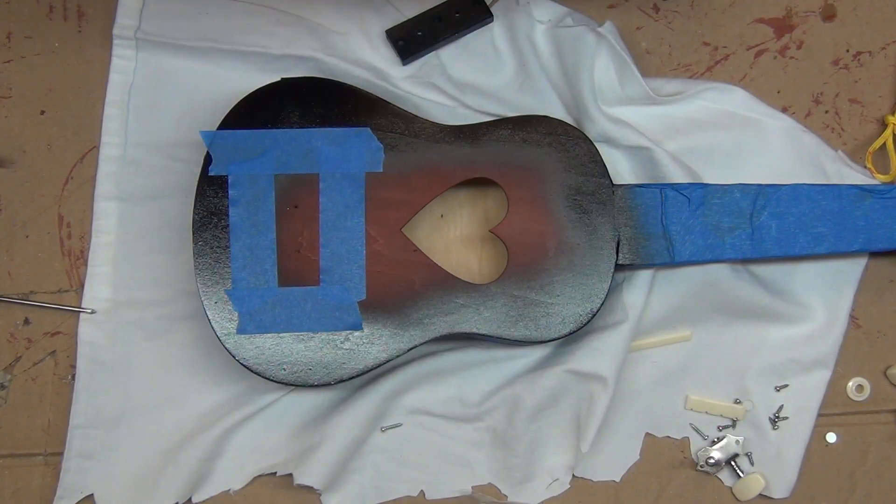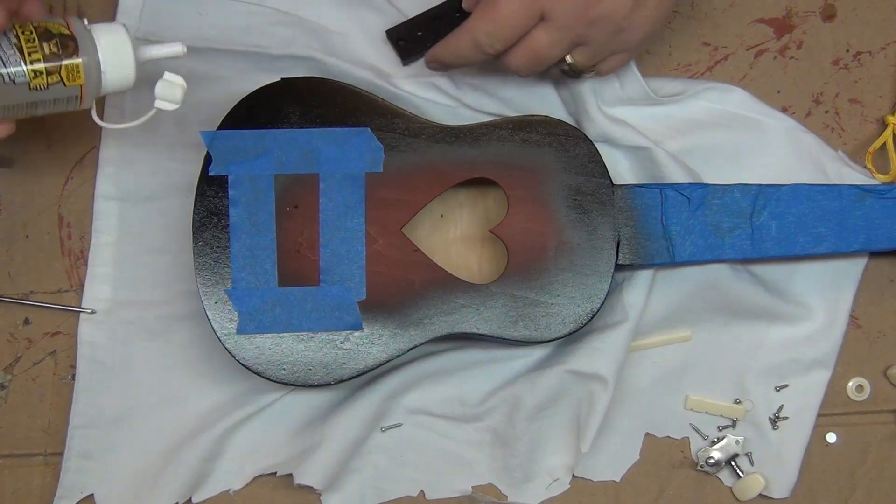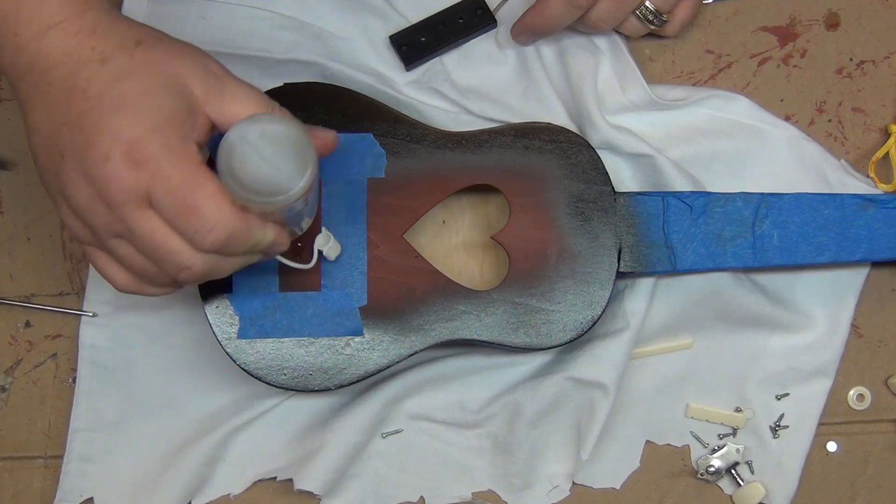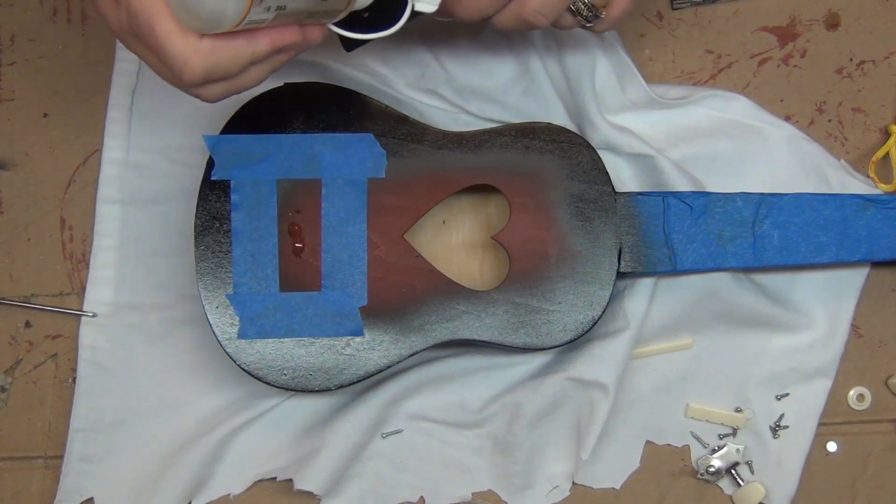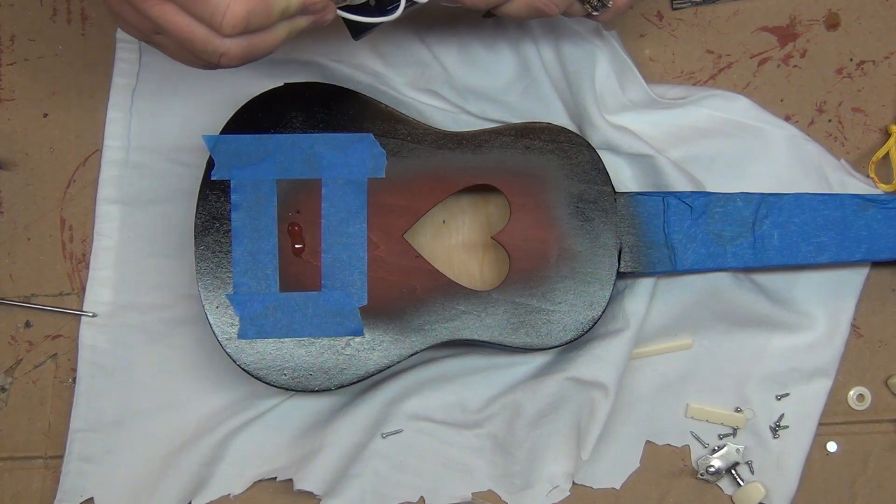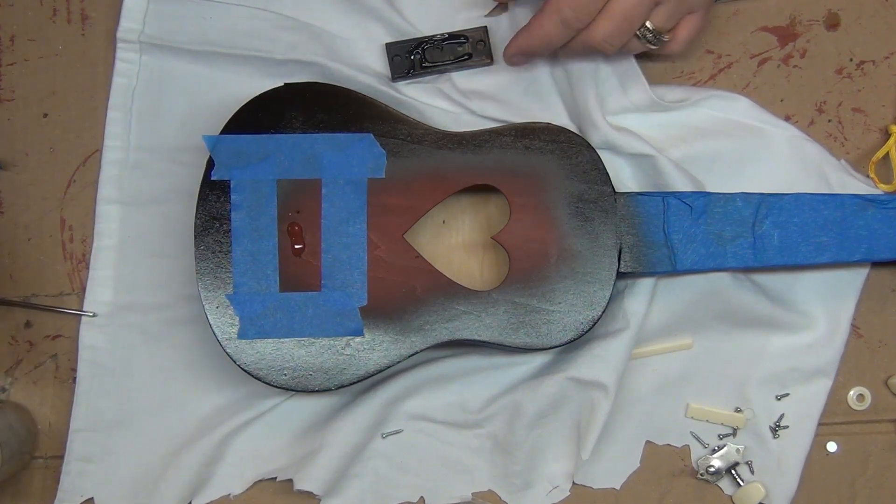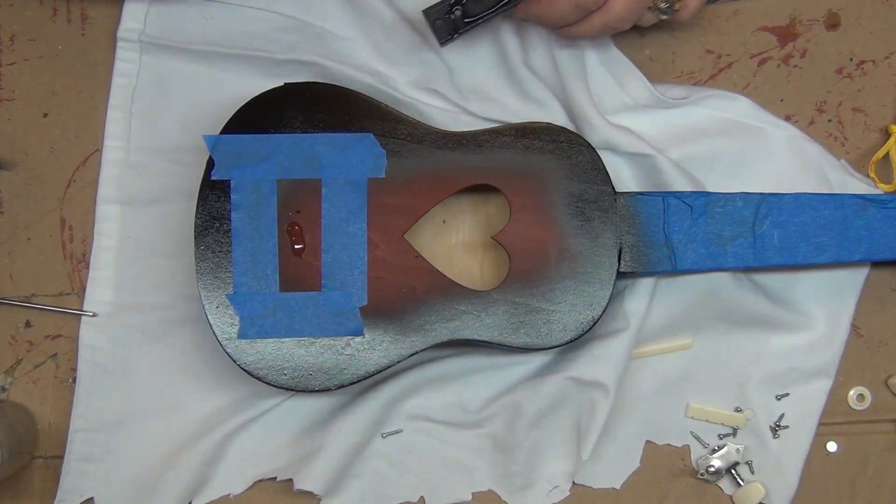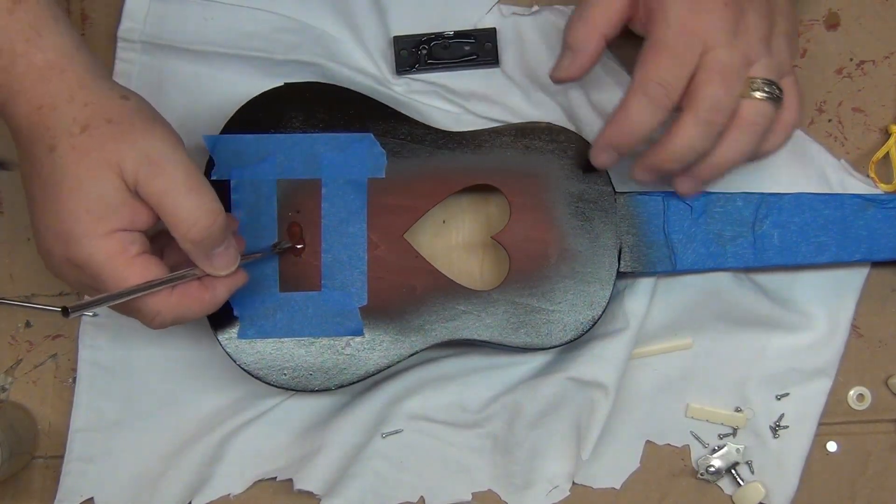Now the bridge is plastic and the ukulele is wood, so I opted not to use a wood glue, but instead I'm using the clear Gorilla Glue. And I applied it to the body of the ukulele as well as the bridge, and then I just took a brush and made sure it was well spread out on both places.